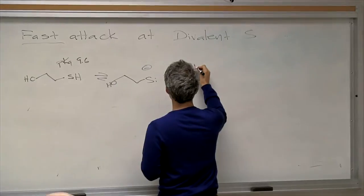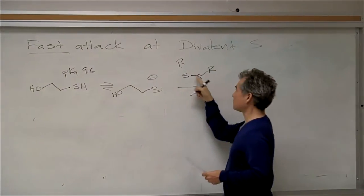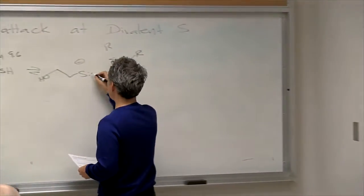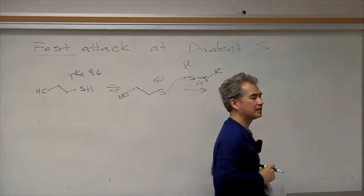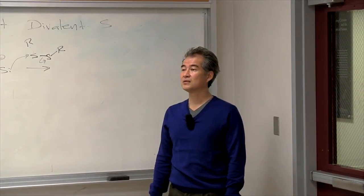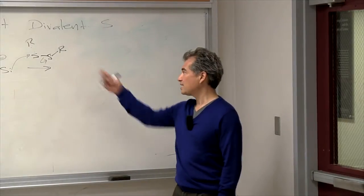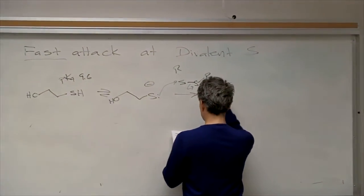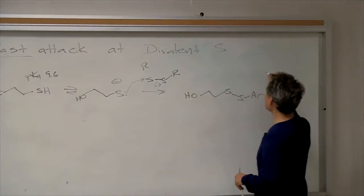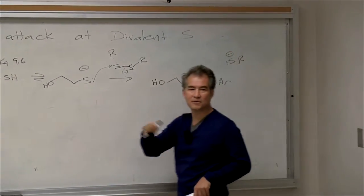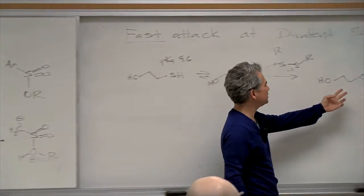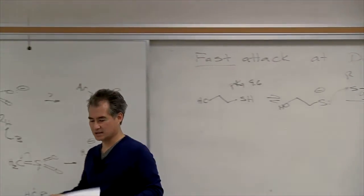And if you put a thiolate anion anywhere near a disulfide — where both sulfur atoms are divalent with only two things attached — you get a very, very fast SN2. SN2 reactions are generally poor; there aren't that many cases where you get fast SN2 reactions. Oxygen-oxygen bonds, bromine-bromine bonds — this is one of the cases where SN2 reactions are fast. This leads to disulfide exchange. The R group that acted as a leaving group can come back in and re-attack very quickly. This is the mechanism for disulfide exchange and the basis for protein disulfide formation.